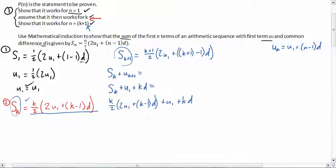Now at this point, you may or may not be able to see how this is going to relate to what we did before, but it will start to come out as we start to do some of this simplification. So the first thing I'm going to do is I'm going to distribute this k over 2 to both of those. So k over 2 times 2u1 is just going to be ku1, and then I'm going to have k over 2 times k minus 1 times d. That was an easy simplification, the 2 over 2. Plus u1 plus kd.